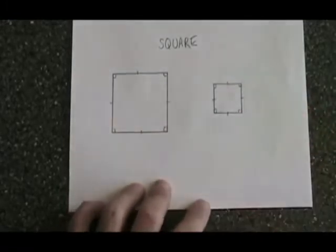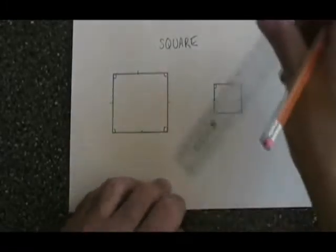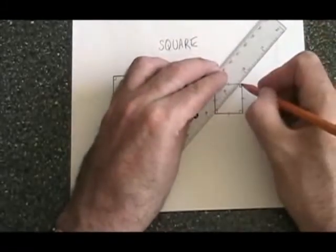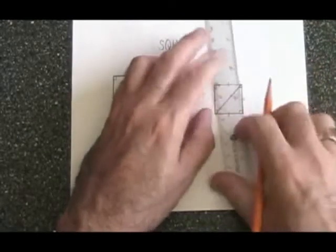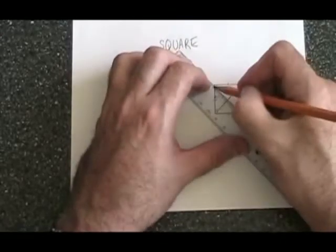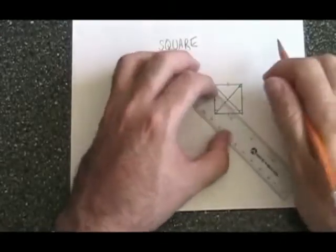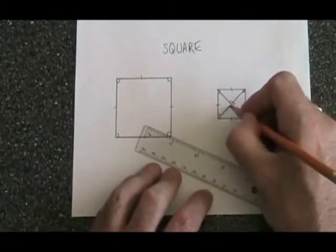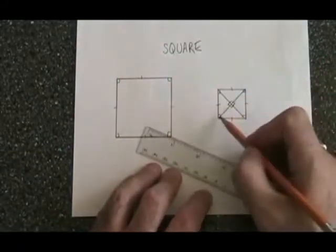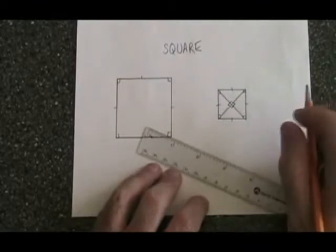The diagonals of a square cross each other at right angles. So therefore, these four angles are all also 90 degrees. And the diagonals of a square have to be equal in length to each other.